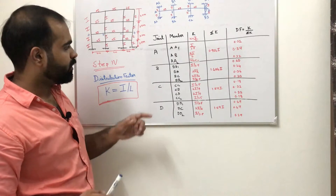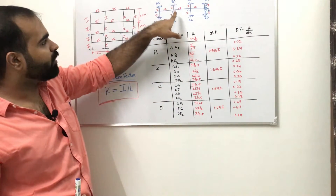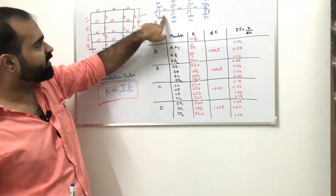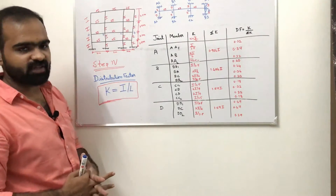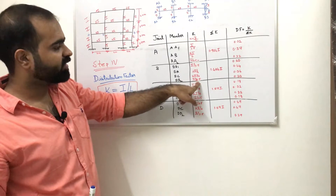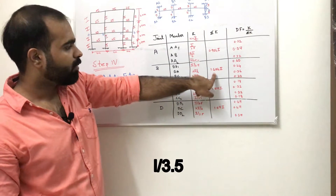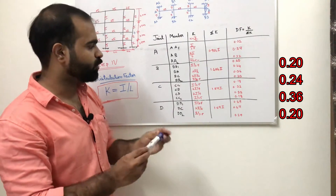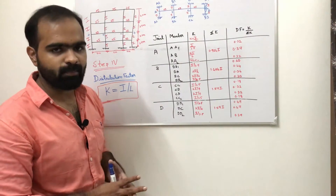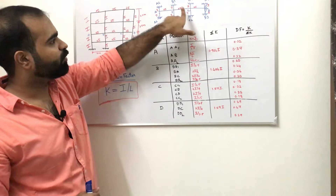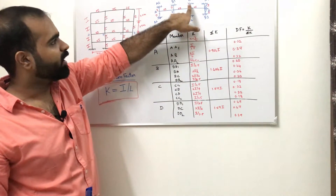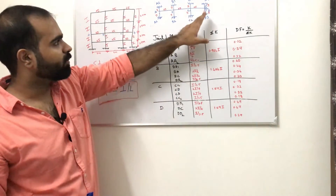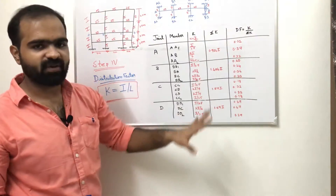For joint C: members CC1 = I/3.5, CC2 = I/3.5, CB = 2I/4, CD = 2I/4. The distribution factors at C: C1 = 0.15, C2 = 0.15, CB and CD are calculated similarly. For joint D: members DD1, DD2, DC are computed in the same way. The distribution factors for all joints are now determined.